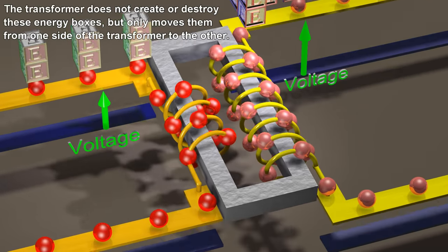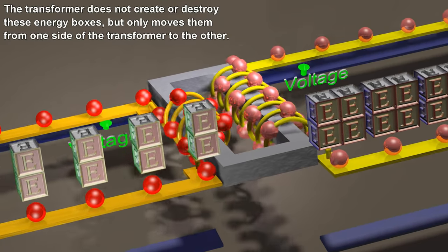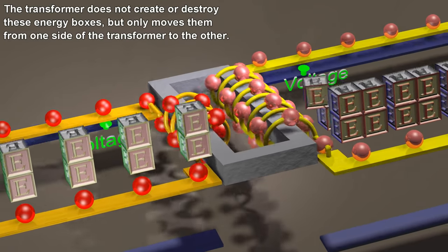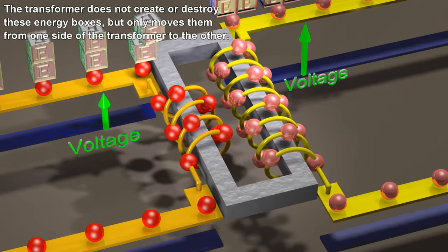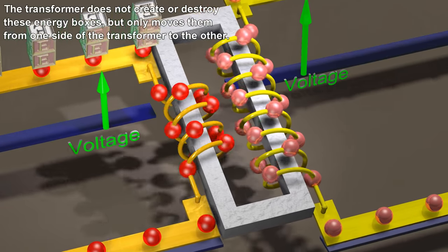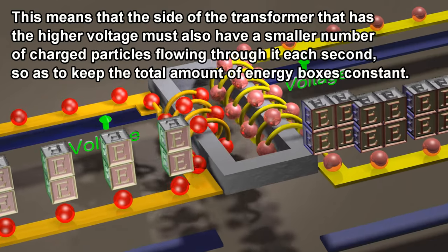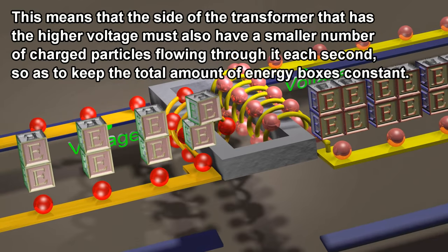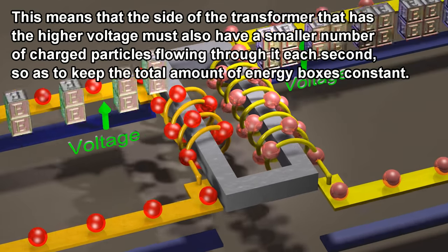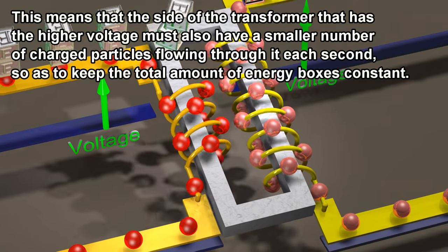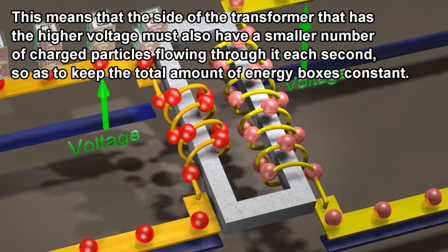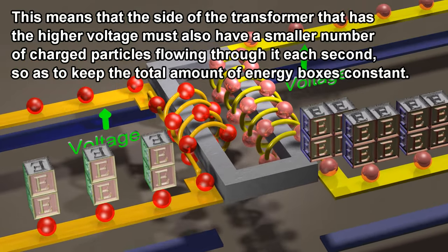The transformer does not create or destroy these energy boxes, but only moves them from one side of the transformer to the other. This means that the side of the transformer that has the higher voltage must also have a smaller number of charged particles flowing through it each second, so as to keep the total amount of energy boxes constant.